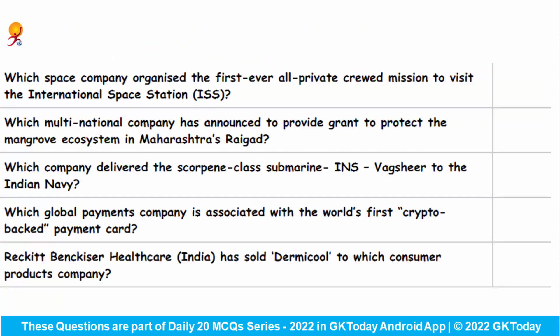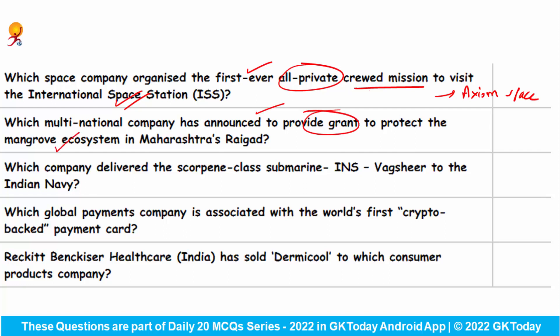Which space company organized the first ever all-private crewed mission to visit the International Space Station? This is Axiom Space. Which multinational company has announced a grant to protect the mangrove ecosystem in Maharashtra's Raigad? Apple will provide the grant to protect the mangroves in the Raigad district of Maharashtra.